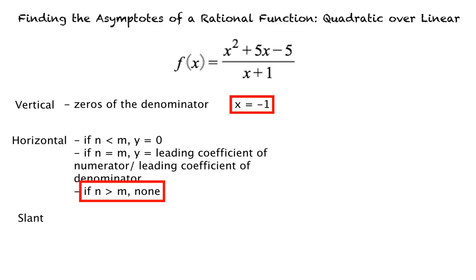Now we'll find the slant asymptotes of this function. What is a slant asymptote? A slant asymptote is a non-horizontal, non-vertical line that the rational function behaves like as x increases or decreases without bound. A rational function in simplest form has a slant asymptote if the degree of the numerator is exactly 1 greater than the degree of the denominator.